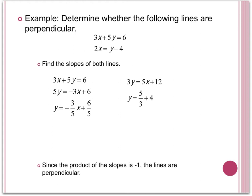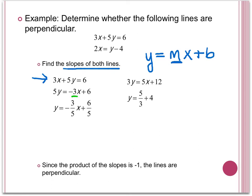Let's do another example. Determine whether the following lines are perpendicular: 3x plus 5y equals 6, and 2x equals y minus 4. The first thing we need to do is find the slopes of both lines. Instead of using the slope formula with two points, we are going to get both equations into the slope-intercept form, y equals mx plus b, and look for the coefficient in front of x to represent our slope. For 3x plus 5y equals 6, when solving for y, we find that y equals negative 3 fifths x plus 6 fifths, so the slope of this first line is negative 3 fifths. Doing the same for the second equation, we find that the slope is equal to 5 thirds.